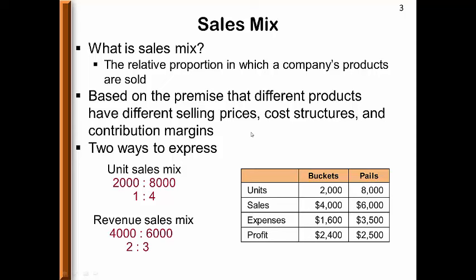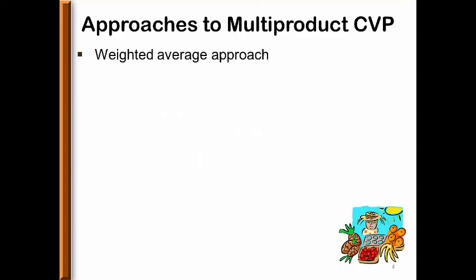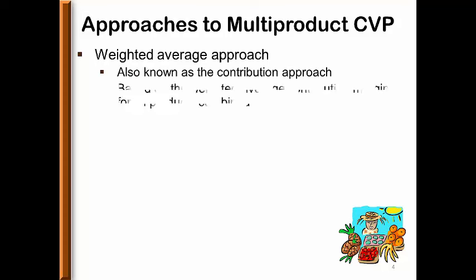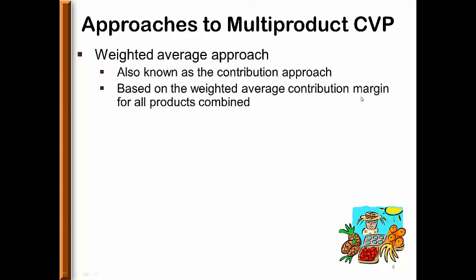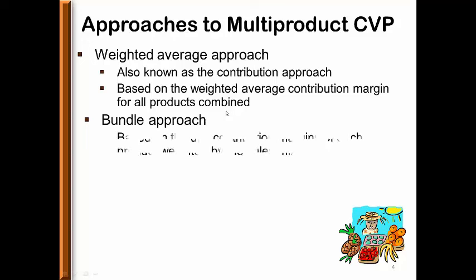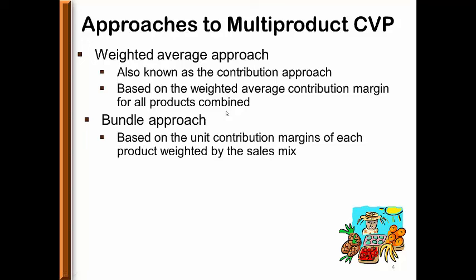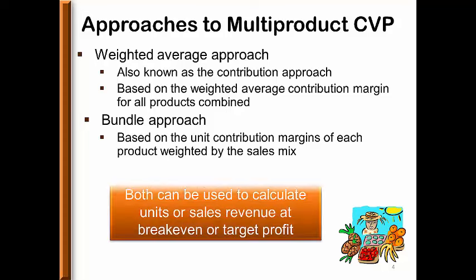We will use the concept of sales mix in cost volume profit analysis with multiple products. There are two approaches. The first is the weighted average approach, often called the contribution approach, based on the weighted average contribution margin for all products combined. The bundle approach is based on the unit contribution margins of each product weighted by the sales mix. Both can be used to calculate breakeven in units or sales revenue, or at a target profit level.